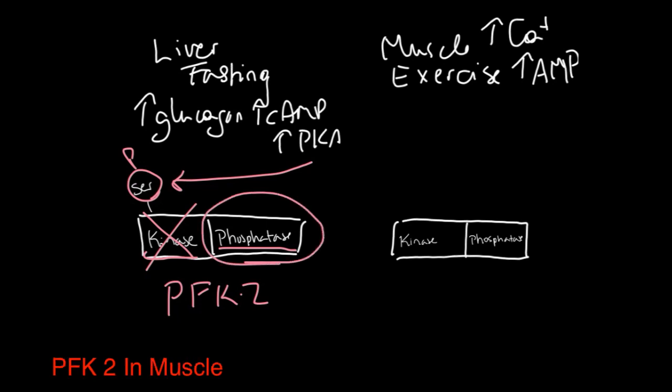In the muscle, you have a slightly different regulation. The muscle does not respond to fasting. It does not have a glucagon receptor. It responds to exercise. And in exercise, calcium is produced and AMP is increased.